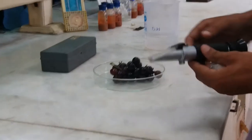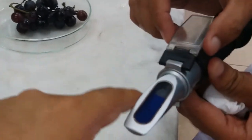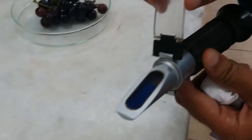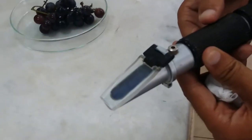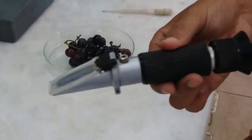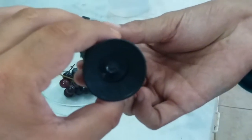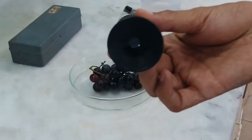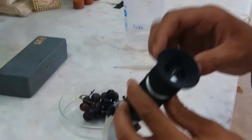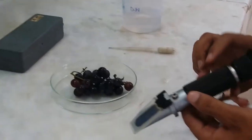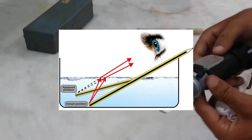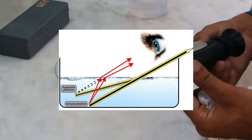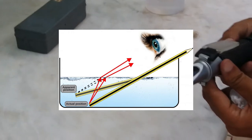Here we have a refractometer which has certain parts. As you can see, this is the lens on which we will place the droplets of the fruit juice. Here is a calibrating point from where we can calibrate the equipment, and here is the lens from which we can see the exact reading. This was about the equipment. The principle on which it works — from the name of the equipment it is clear that it works on the principle of refraction.